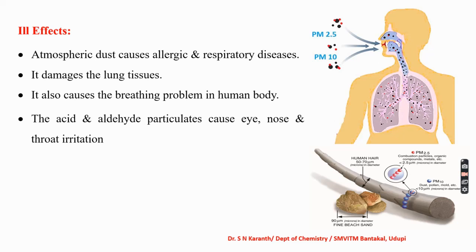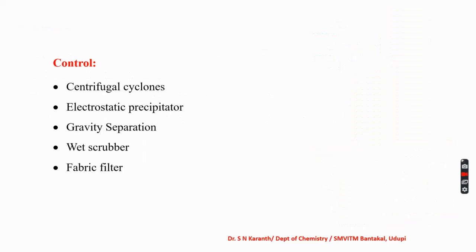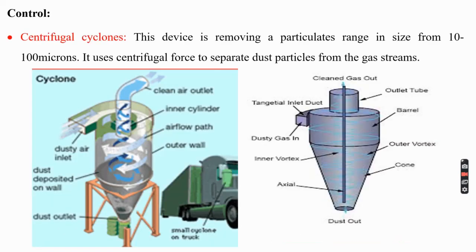How can particulate matter be controlled? There are many methods: centrifugal cyclones, electrostatic precipitator, gravity separation, wet scrubber, and fabric filter. The centrifugal cyclone device removes particulates ranging in size from 10 to 100 microns. It uses centrifugal force to separate dust particles from the gas stream. Dust particles are introduced at the inlet, and due to the continuous centrifugal movement, the dust particles settle at the bottom and are removed from the outlet, while the air at the top layer is collected free from dust particles.